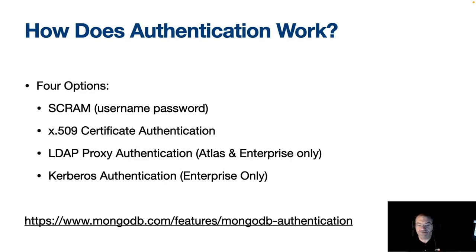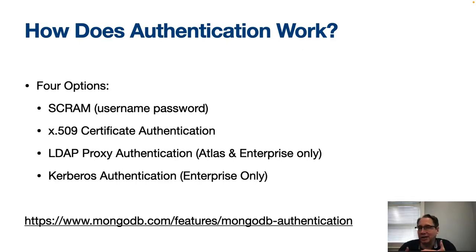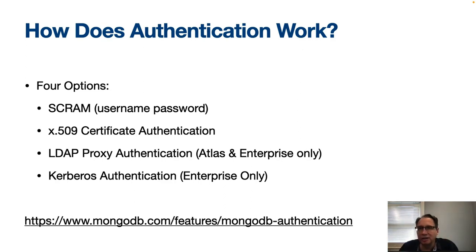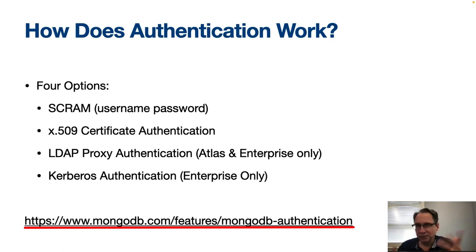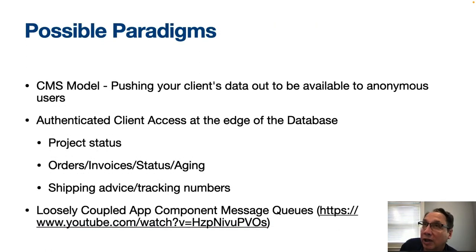Authentication in MongoDB is pretty much comparable to FileMaker. You have SCRAM — Salted Challenge Response Authentication Mechanism — basically username and password. You can do X.509 certificate authentication: as long as you have the certificate, you connect. You can use LDAP on Atlas or enterprise versions. Kerberos authentication is available on the enterprise version. There's a link for those interested in implementing authentication in Mongo.